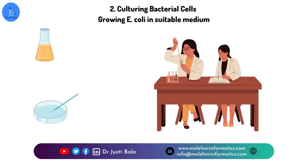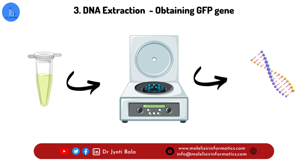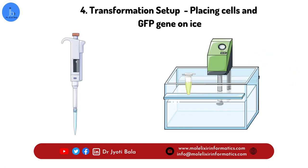The second step is culturing the bacterial cells. Start with a culture of E. coli cells and grow them in suitable growth media until they reach the desired density. The next step is DNA extraction — extract the GFP gene from the donor organism or obtain it from a commercially available source. Then, for the transformation setup, create a heat shock setup by placing the extracted GFP gene and the competent E. coli cells on ice.